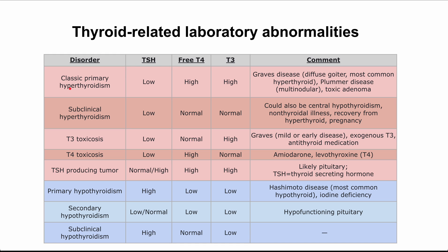In all kinds of primary hyperthyroidism, you'll have high thyroid hormone, and the body's response is to decrease TSH to try to reduce that thyroid hormone. So TSH is going to be low, whereas your T4 and T3 are going to be high.